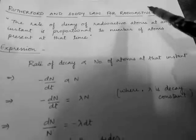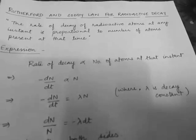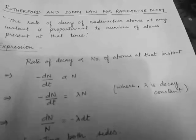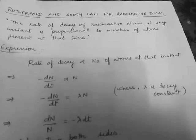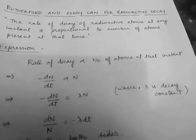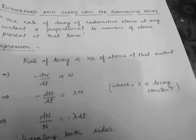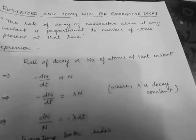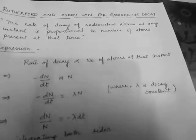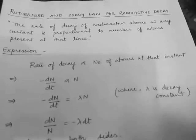Let's start with the next topic: Rutherford and Soddy's law for radioactive decay. Radioactive decay means whenever a radioactive substance emits or radiates a particle like alpha, beta, or gamma. In alpha and beta radiation, the atomic number of the radioactive substance changes. Since the identity of a substance is its atomic number, this continuous changing of one radioactive substance into another is called radioactive decay.